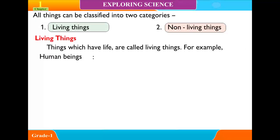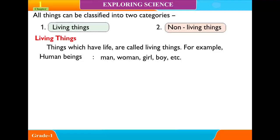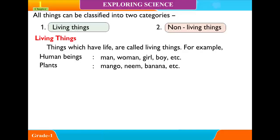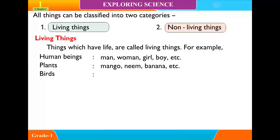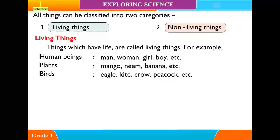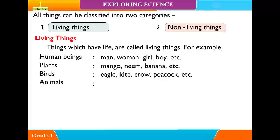Examples of living things include: Human Beings such as men, women, girls, and boys. Plants such as Mango, Neem, and Banana. Birds such as Eagle, Kite, Crow, and Peacock. Animals such as Cow, Dog, Cat, and Snake.